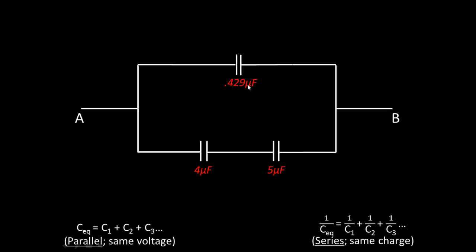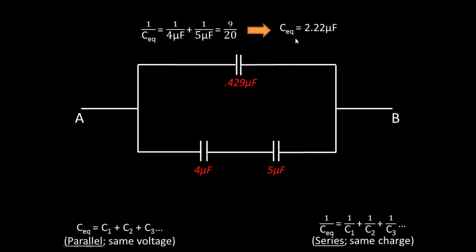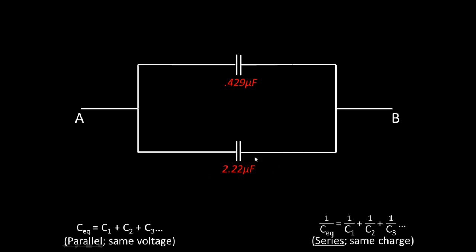So now we're left with three capacitors — one in the top and two in the bottom. The two in the bottom are in series with each other, so we add inversely: 1/4 + 1/5 = 9/20. Taking the inverse, the equivalent capacitance for the bottom branch is 2.22 microfarads, and that's been replaced.